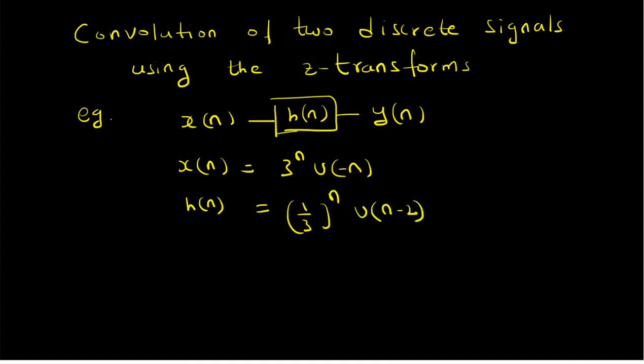The first step is we have to convert both X of n and H of n into the Z domain — that is, we have to find the corresponding Z transforms.